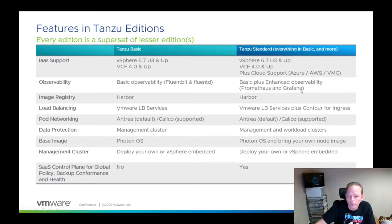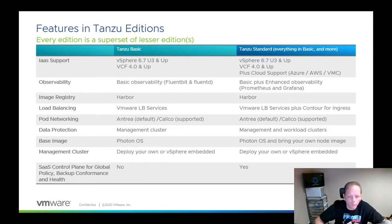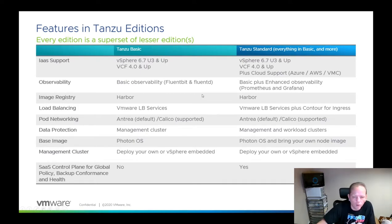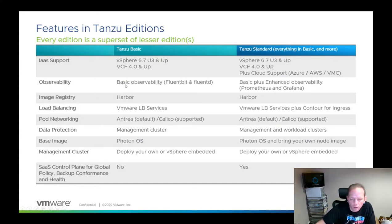For monitoring, Tanzu Basic includes basic metrics and log reporting — out of the box there's quite a bit involved: sending logs to multiple destinations, metrics aggregation, etc. We provide pre-configured metric and log outputs. In Tanzu Standard, that's enhanced with basic dashboards and support for Prometheus and Grafana dashboards. In both cases, the image registry is Harbor.